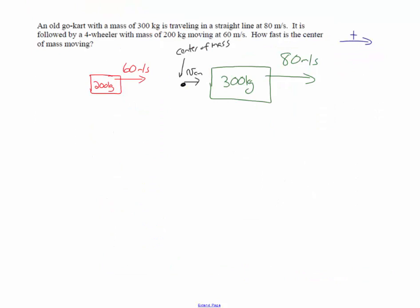In this second example, we have a go-kart with a mass of 300 kilograms moving to the right at 80 meters per second, and a four-wheeler with a mass of 200 kilograms moving to the right at 60 meters per second. We want to figure out how fast the center of mass is moving. There's no external force, so the velocity of the center of mass is going to stay constant — even though the objects are getting farther apart.